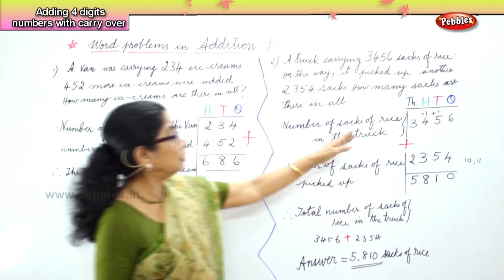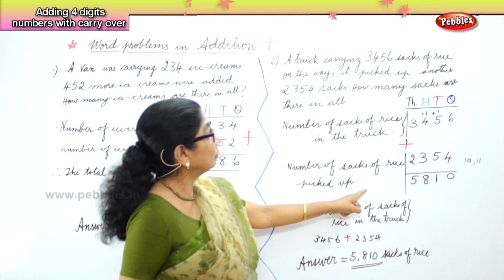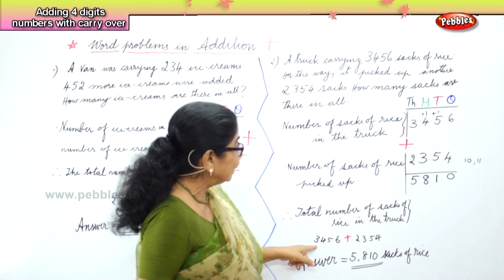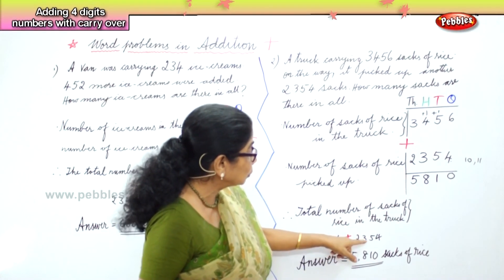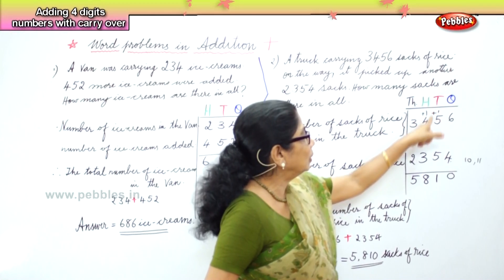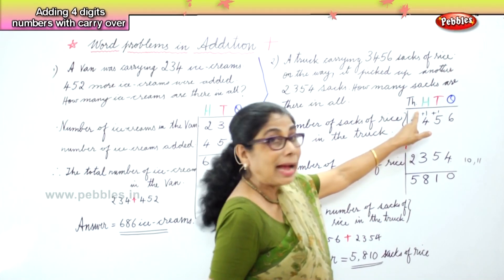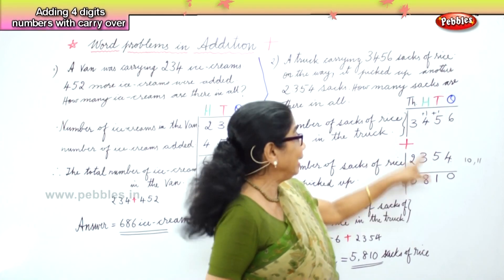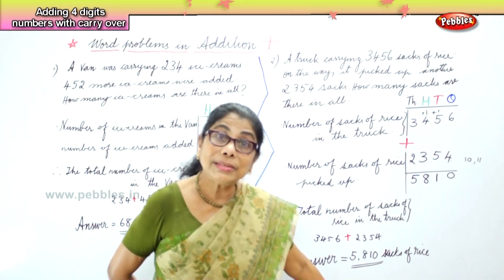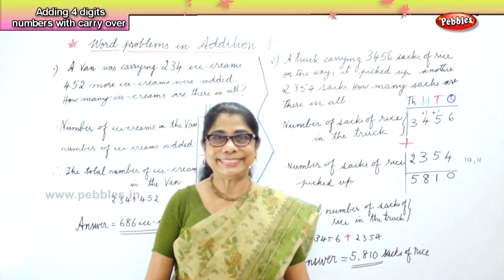Now, what did we do? Number of sacks of rice in the truck: 3,456. Number of sacks of rice picked up on the way: 2,354. Therefore, total number of sacks of rice in the truck is 3,456 plus 2,354. That is 6 plus 4 is 10, 0 in the ones place, 1 carried over to the tens; 5 plus 5 plus 1 is 11, 1 in the tens place, 1 carried over to hundreds; 4 plus 1 plus 3 is 8; 3,000 plus 2,000 is 5,000. Answer: 5,810 sacks of rice. What we learnt today is word problems in addition.